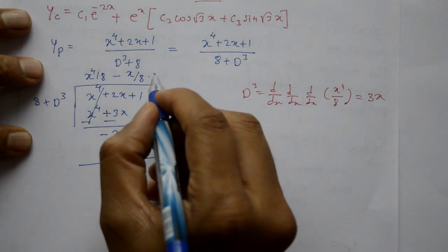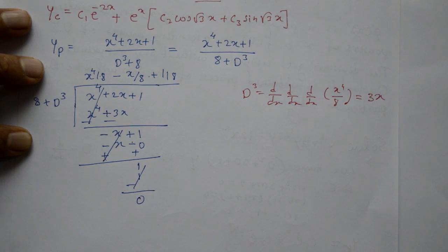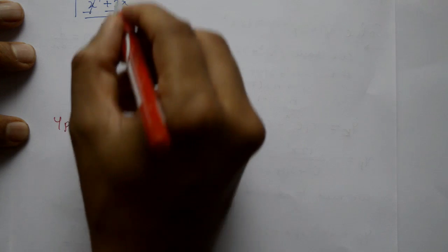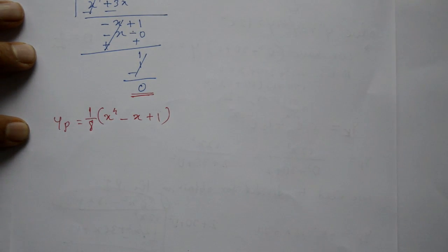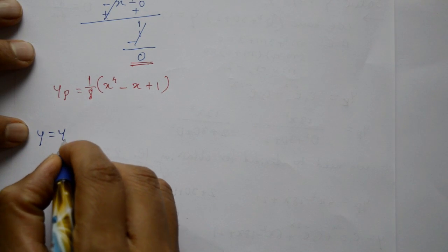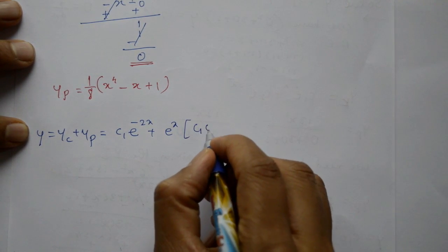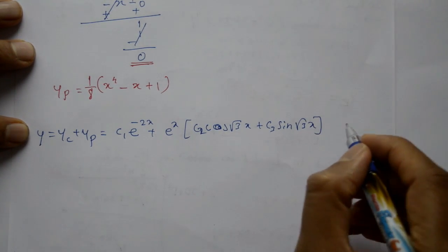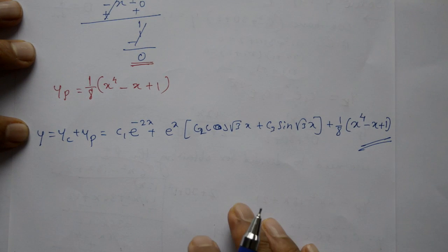Multiply (1/8) by 8 gives 1 — cancel. Remainder is 0. The quotient is the particular integral: yp = (1/8)(x⁴ − x + 1). The complete solution is y = c₁e^(−2x) + e^x(c₂cos(√3·x) + c₃sin(√3·x)) + (1/8)(x⁴ − x + 1). This is the required complete solution.